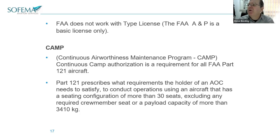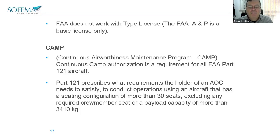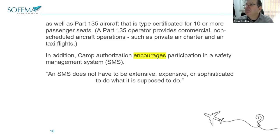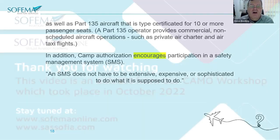The FAA has something called CAMP — Continuing Airworthiness Maintenance Program. It's a requirement for all Part 121 aircraft, which covers AOC operations with more than 30 passengers. It's also required for Part 135, which covers 10 or more passengers. Part 135 operators provide commercial non-scheduled aircraft operations, so business jets typically operate under Part 135.